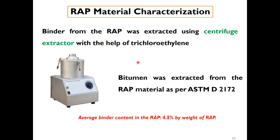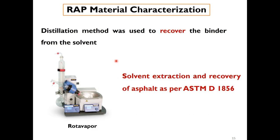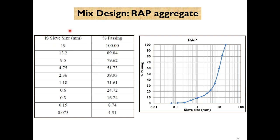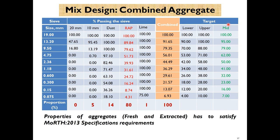The RAP material is characterized. In this example, the binder from the RAP was extracted using a centrifuge extractor with trichloroethylene as per ASTM D2172. Let us assume the average binder content in the RAP is 4.5 percent by weight of the RAP. We then recover this binder through distillation and find out its viscosity, as per ASTM D1856 for solvent extraction and recovery of asphalt. We assume this is the aggregate gradation of the RAP material, and we need a target grading.